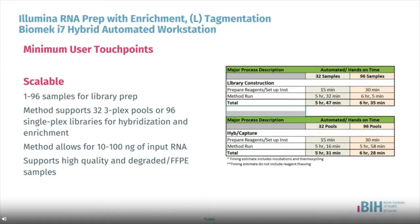The method is scalable, capable of running up to 96 samples for library preparation, and either up to 96 single-plex libraries or up to 32 three-plex pools for hybridization and enrichment. Users may vary input material from 10 to 100 nanograms of input RNA and can run both high-quality intact or FFPE samples. The method reduces total user touch points and can be run in as few as two manual user interventions. The entire workflow for 96 samples pooled down to 32 three-plex pools can be performed in approximately 12 hours.